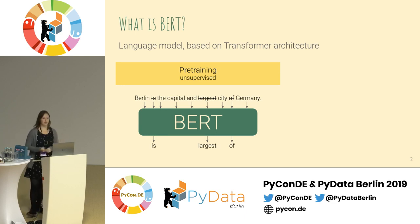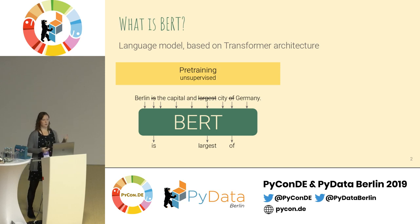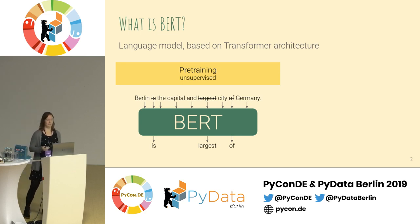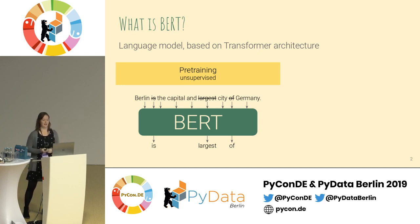In this example, the words 'is', 'largest', and 'of' are masked. We then ask the model to predict which words should fill the missing gaps. This training procedure works completely unsupervised. We can generate as much training data as we want from simple raw text — just take the text, mask some words, and use the masked words as the training objective.